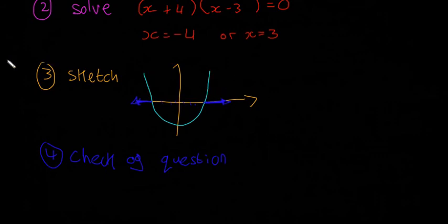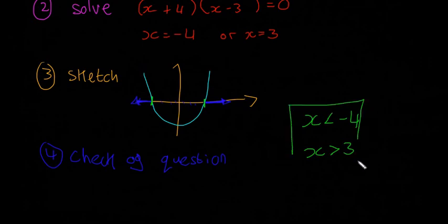So then our answer, I'll go green. You're going to look at these and then look at this to get it. So the answer, it's going to be whenever x is less than minus 4, remember that's going to be minus 4 and that's going to be 3 because they're the roots. So it's whenever x is less than minus 4 and then on this side it's going to be wherever x is greater than 3. And there are answers.